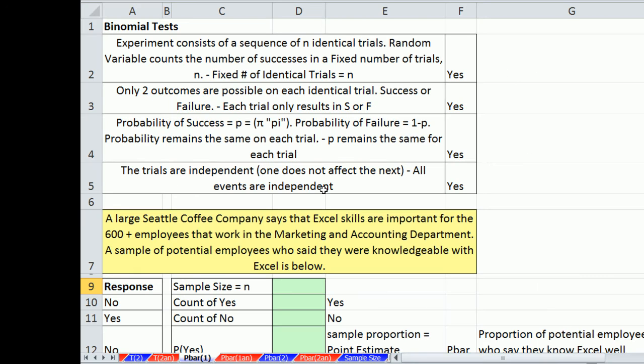All right, so here's our example. A large Seattle coffee company says that Excel skills are important for the 600 plus employees that work in the marketing and accounting department. A sample of potential employees who said they were knowledgeable with Excel is below. So what they did is they went out and they asked potential employees, are you knowledgeable? Now, notice the employee is answering either yes or no.